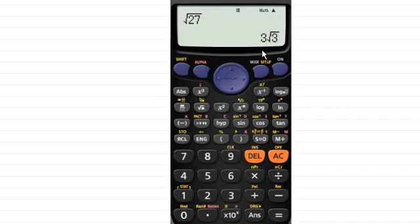So how does the calculator give us these answers? What's the mathematics behind simplifying the square root of 27? Well, that's the purpose of this particular tutorial. I want to show you how we can go about simplifying surds.